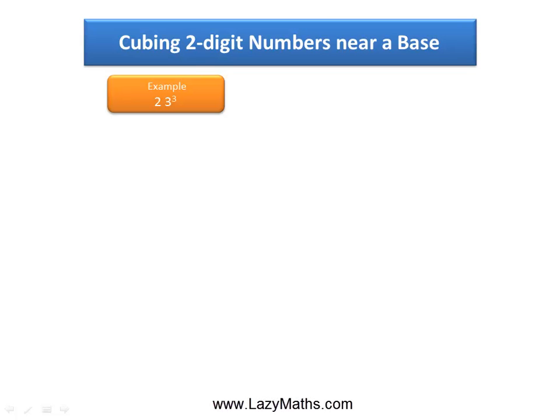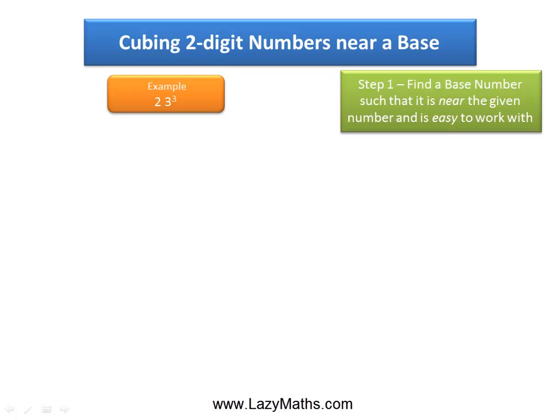Here is an example of cubing two-digit numbers near a base: 23 cubed. The first step is to find a base number, which is a number that is near the given number and easy to work with. In this case the base number is 20, because 20 is very close to 23.